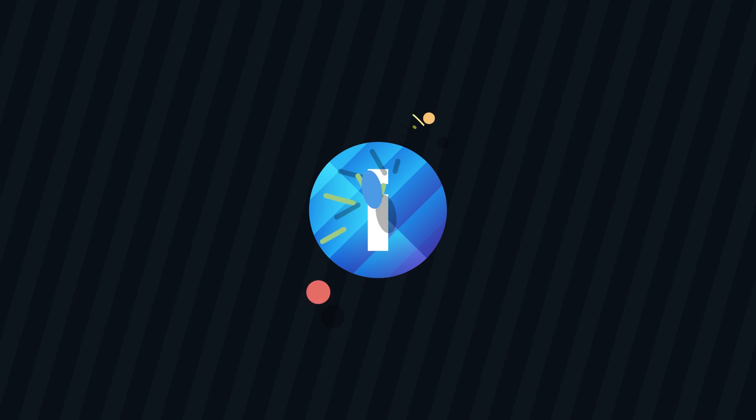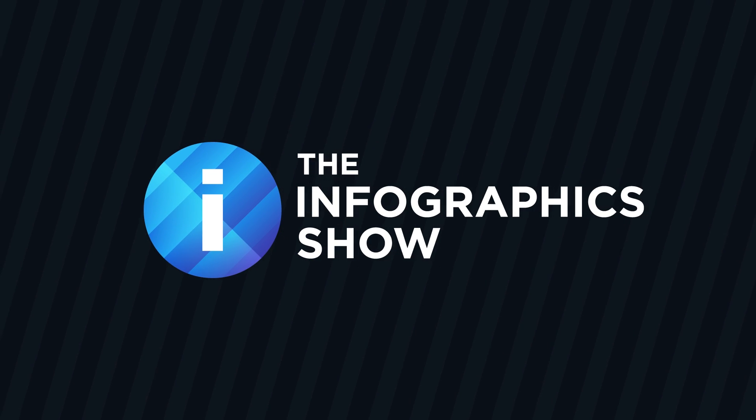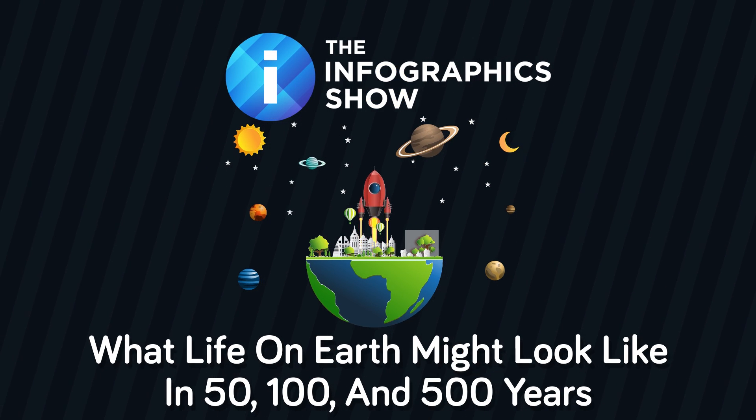Welcome to this episode of the Infographics Show, where we take a look at what life on Earth might look like in 50, 100, and 500 years.